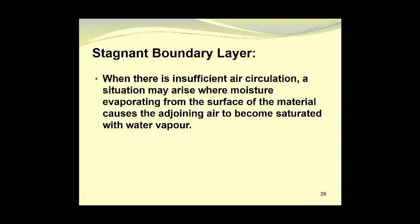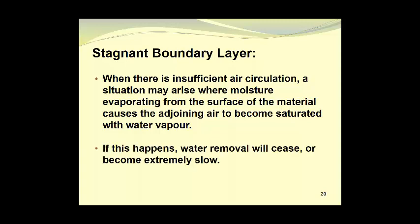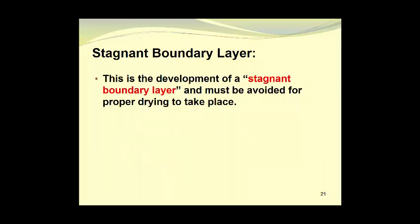Now let's take a look at what we know as the stagnant boundary layer. When there is insufficient air circulation in a dryer, a situation may arise where moisture evaporating from the surface of the material causes the adjoining air to become saturated with water vapor. If this happens, water removal will cease or become extremely slow. This is the development of a stagnant boundary layer, and it must be avoided for proper drying to take place.